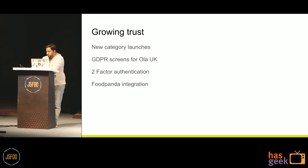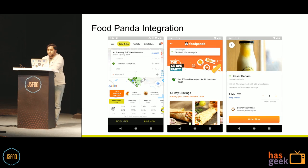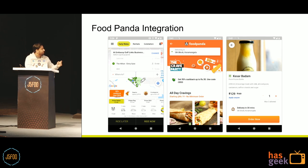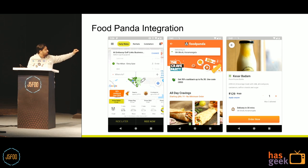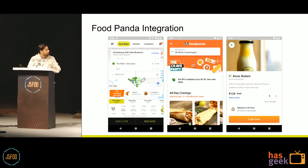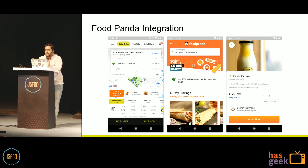Of all the integrations, the Foodpanda integration was quite a large one in terms of scale. As you can see, along with the category you can see a Foodpanda icon and information bar. When you click on that, a full-fledged Foodpanda website is loaded in the web view and you are able to order inside the Ola app. This was a very big project where we built an entire website using OneWeb.